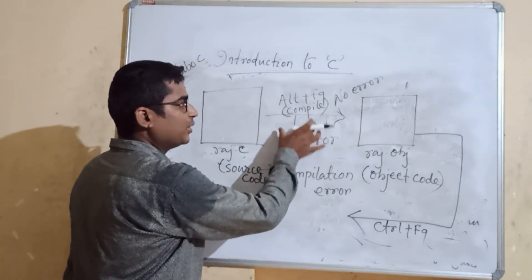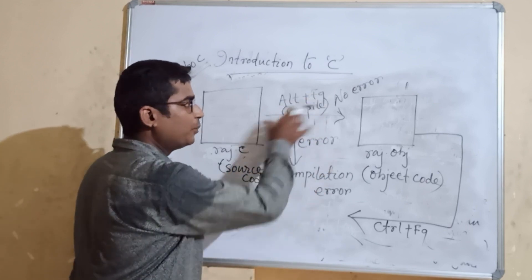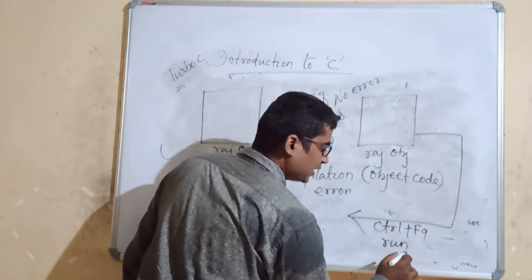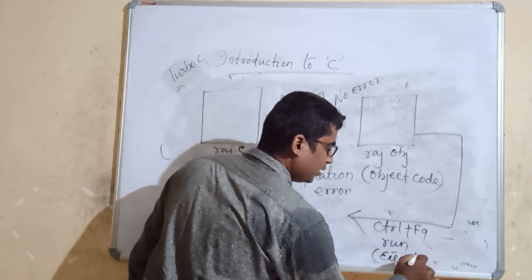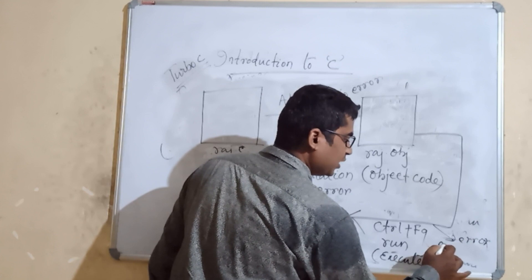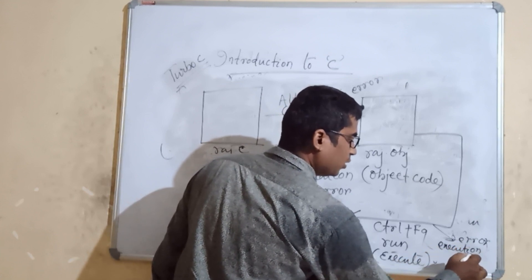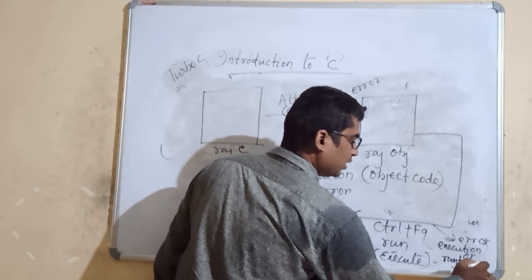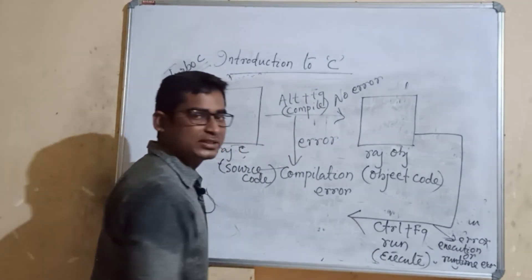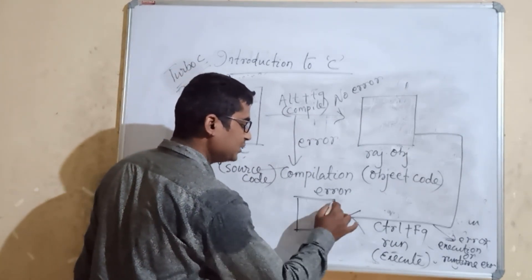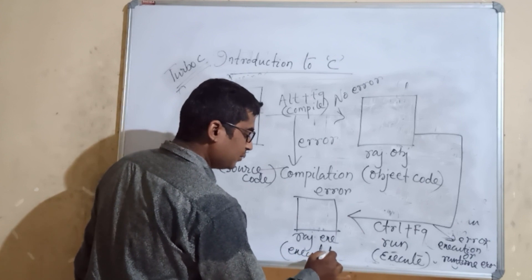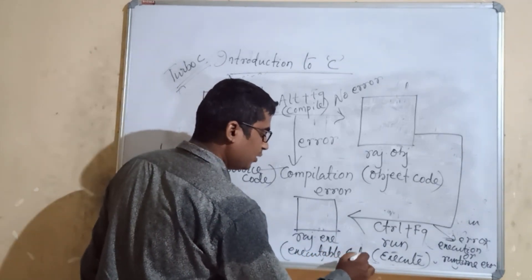In Turbo C, you can compile using Alt+F9 or by going to Tools and pressing Compile. To execute, press Ctrl+F9 or go to Tools and select Run. If there is an error during compilation, it is a syntax error. If the error occurs at runtime, it is called a runtime error or execution error. If there is no error, a file named raj.exe — an executable file — is created.